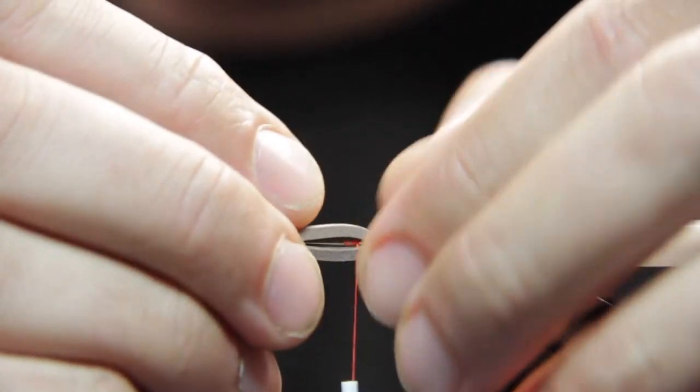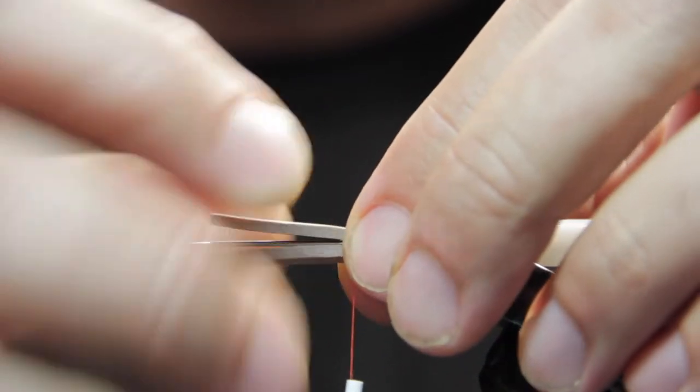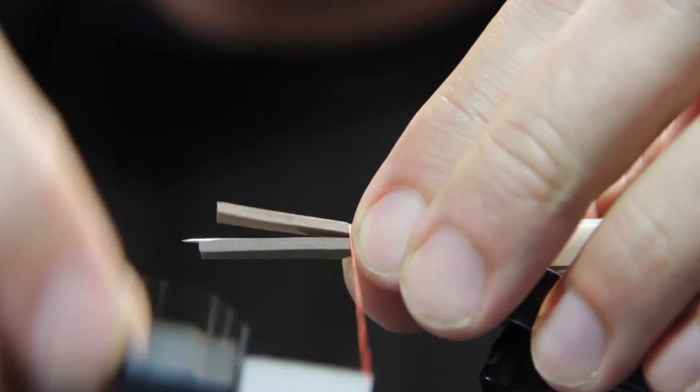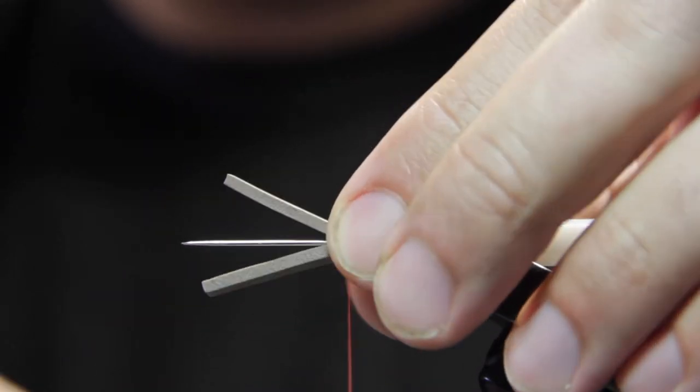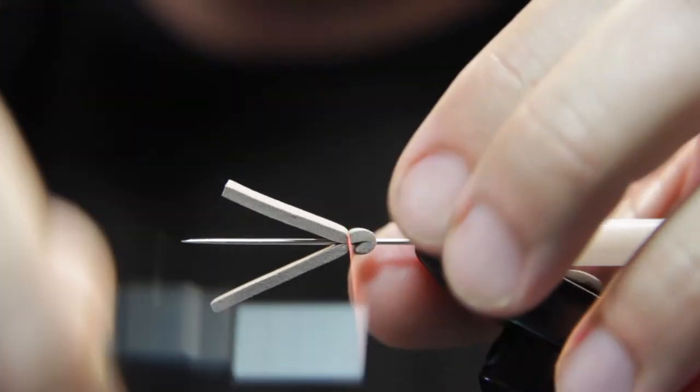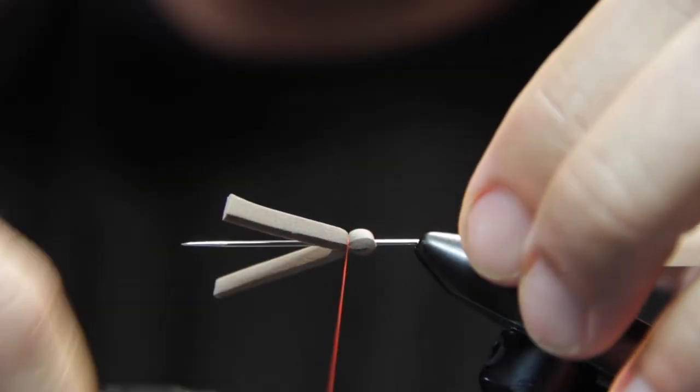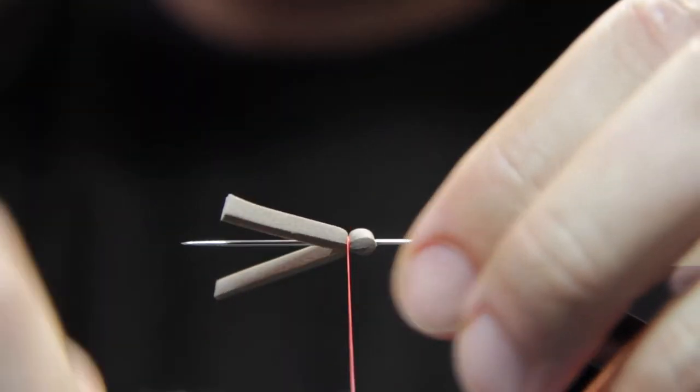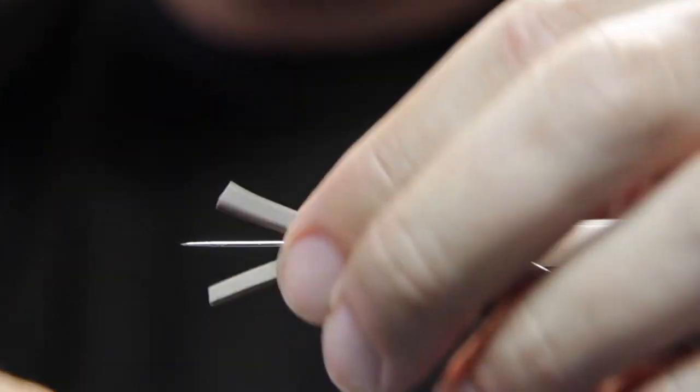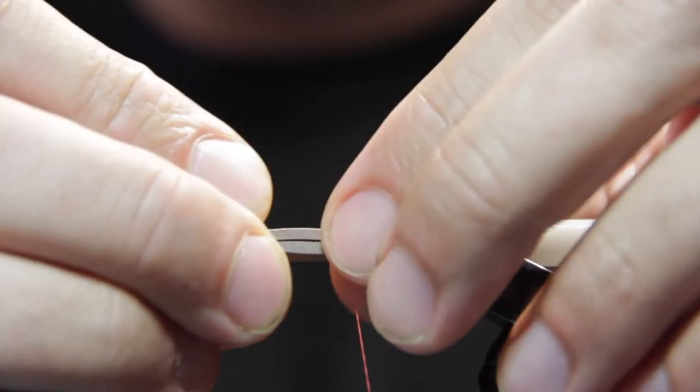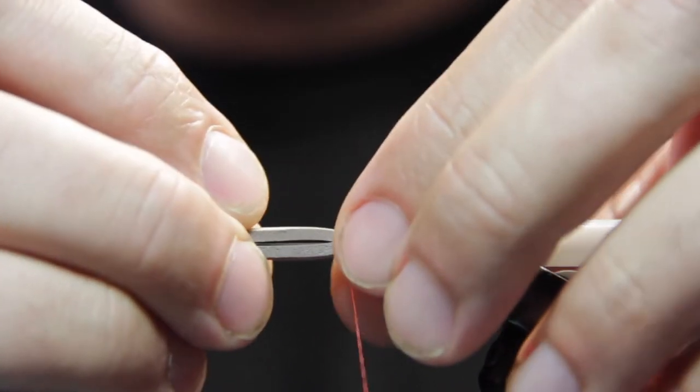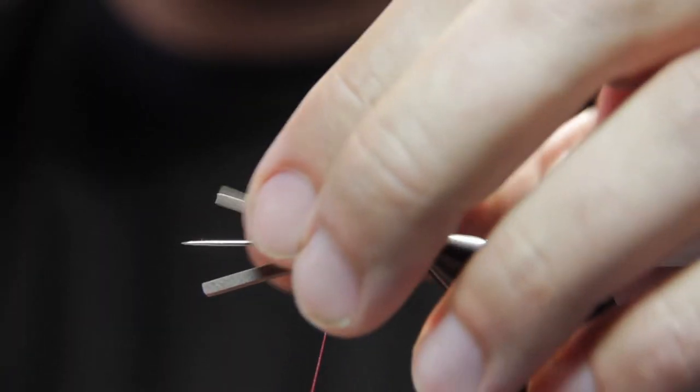We're going to double our foam over along the bodkin and we're going to get these first few wraps kind of where we want that last segmented portion of the body to be. Quite a few wraps. In this case we want that orange thread to kind of come through.